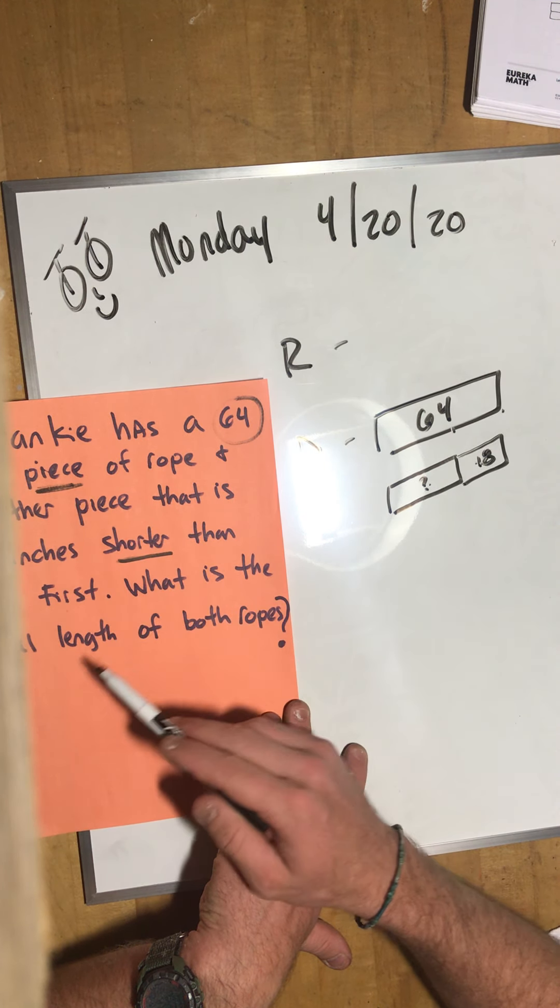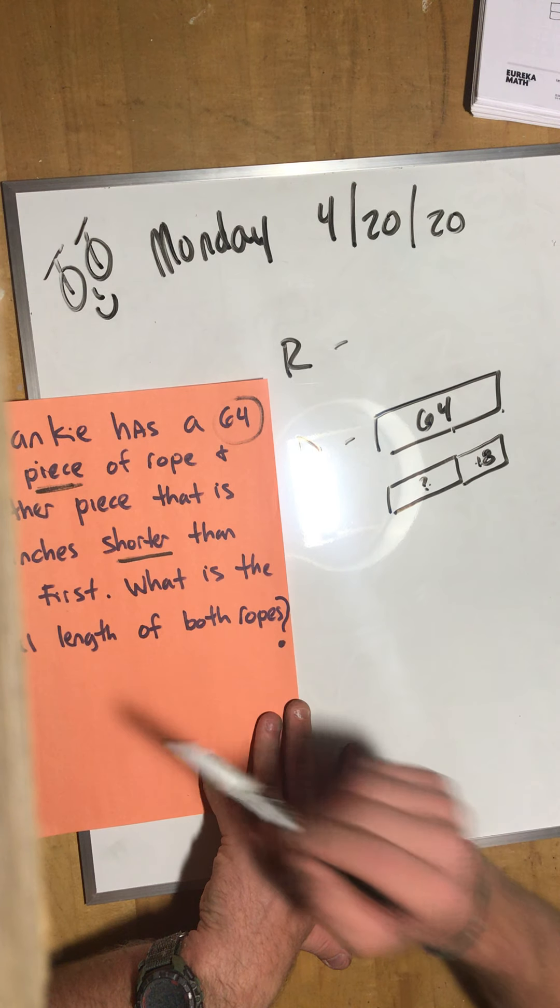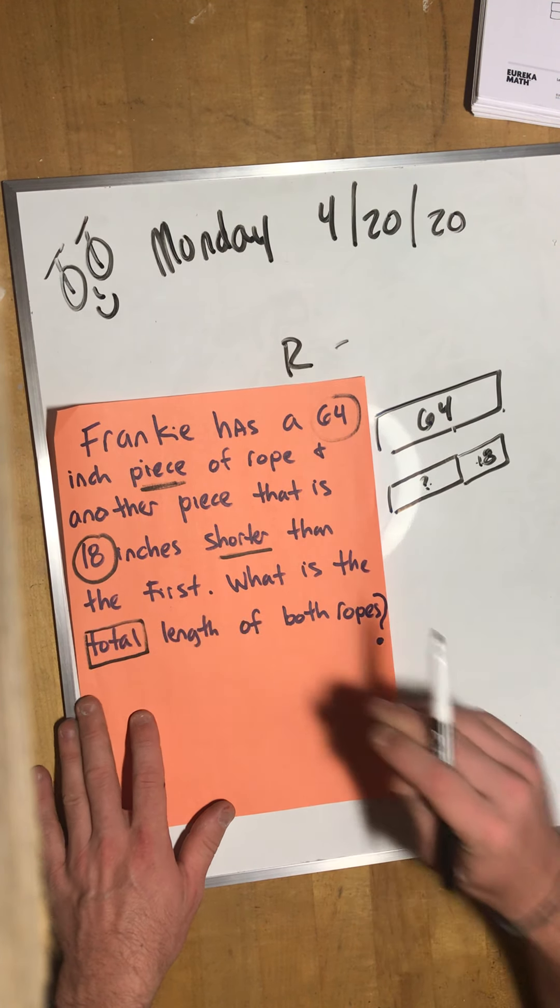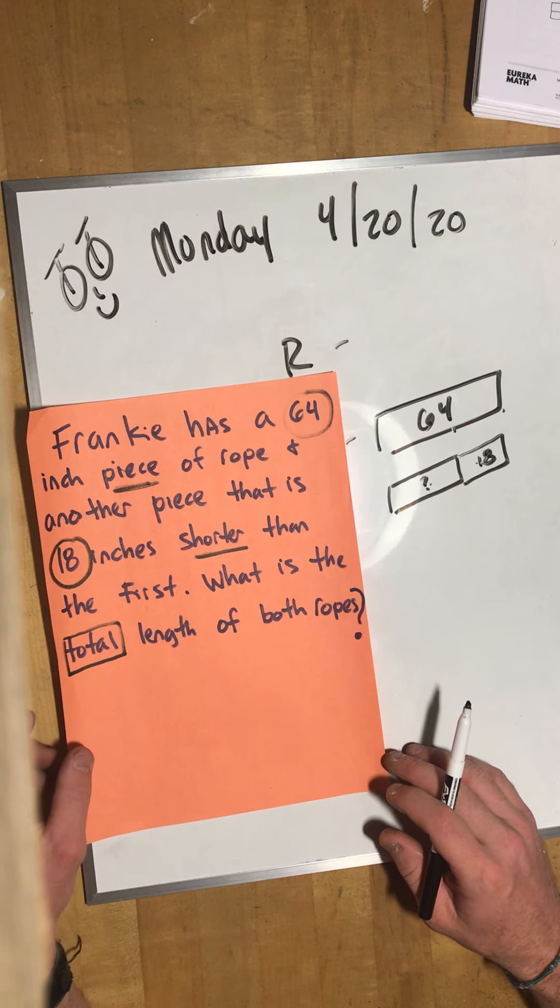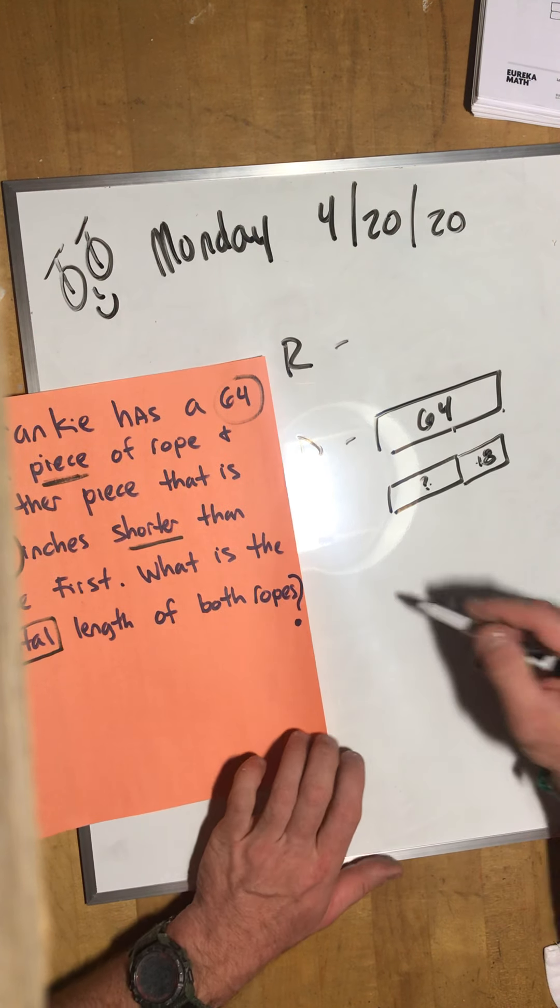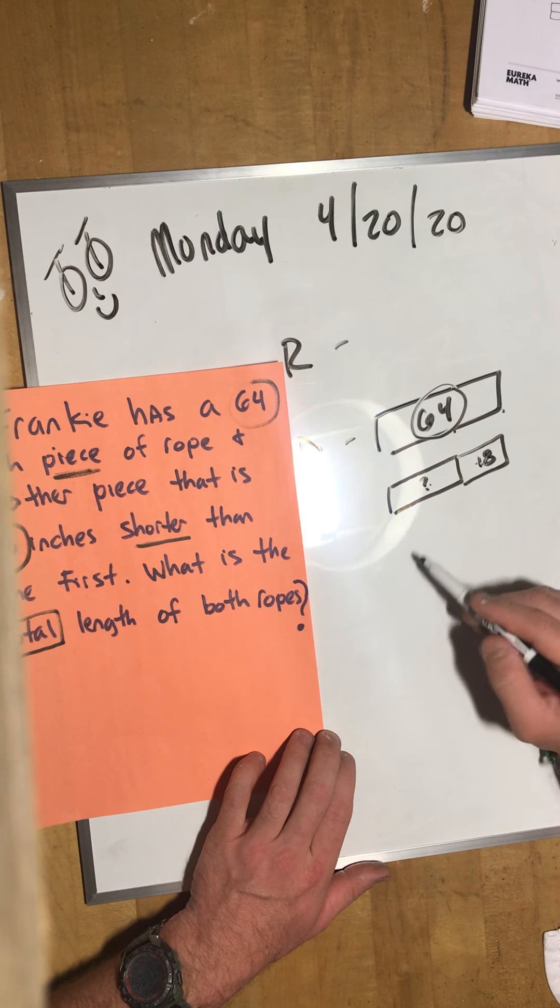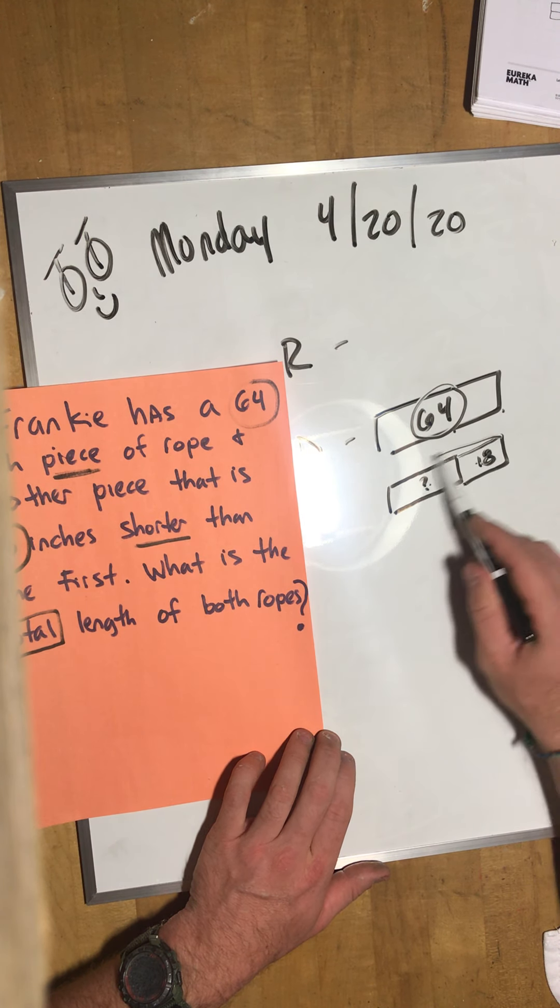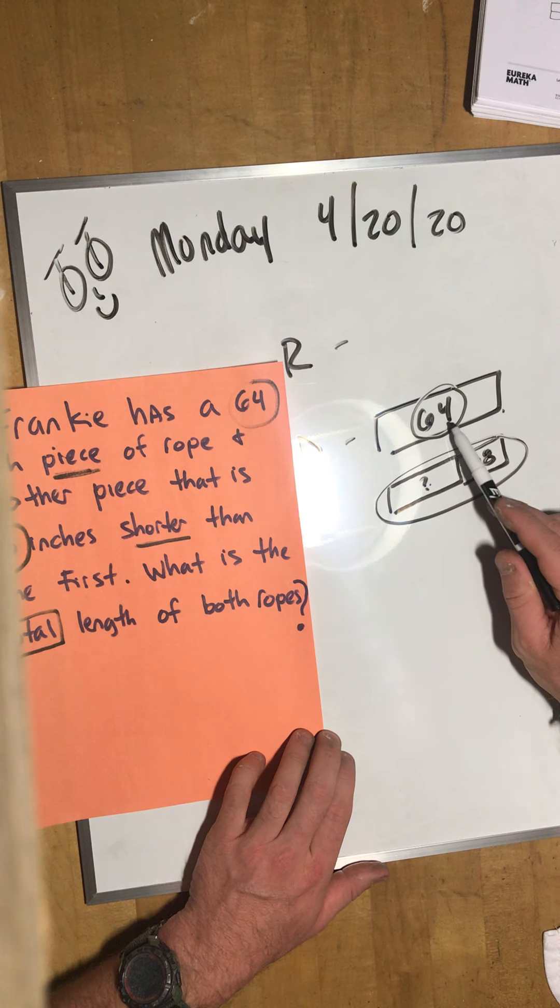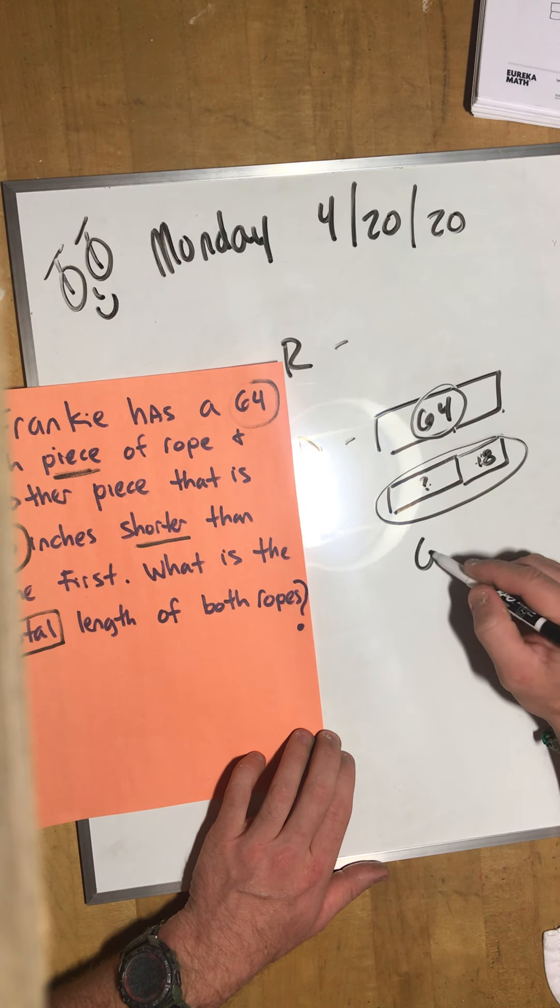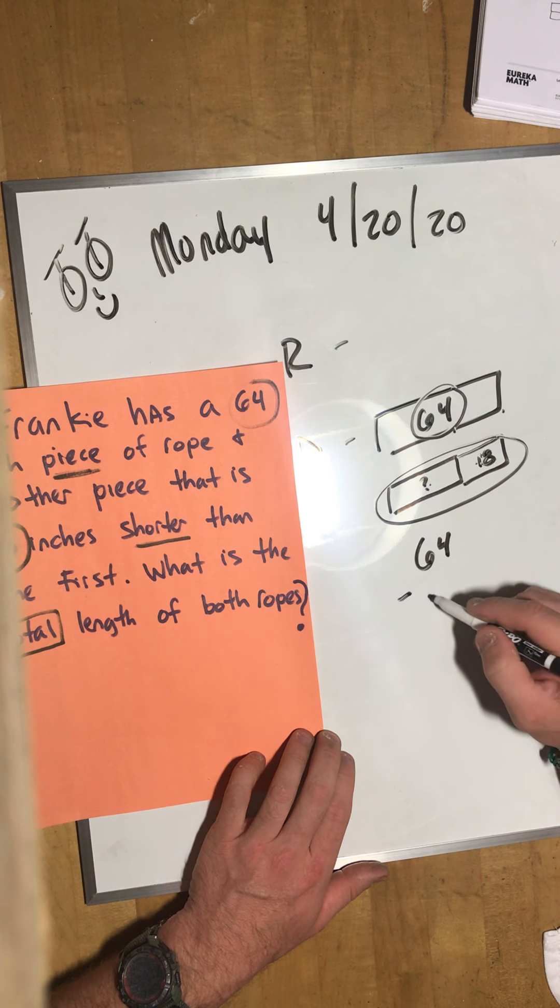And another piece that is 18 inches shorter. We don't know what this length is but we know that from here to here is 18 inches. So these two pieces make 64 inches. What is the total length of both ropes? Total is a word that I missed that is super important.